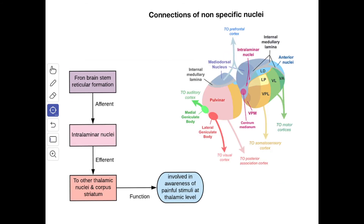Next we'll see the connections of the intralaminar nuclei. From the brainstem and the reticular formation the afferents terminate in the intralaminar nuclei. From here the efferent goes to the other thalamic nuclei and corpus striatum. The function is it is involved in the awareness of painful stimuli at the thalamic level.